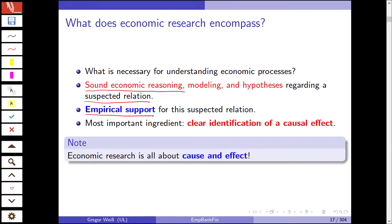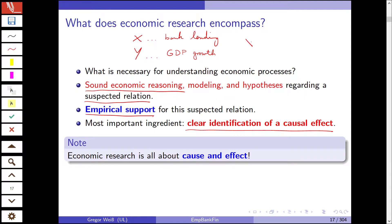The most important ingredient is a clear identification of a causal effect. For example, we argue that X is bank lending and we suspect that Y is GDP growth, and we suspect that X influences Y and that this relation is positive. That's our hypothesis. We can go to the theoretical literature and find models for this suspected effect of X on Y, and then we need to make sure that we identify a causal link between X and Y. It's all about cause and effect.